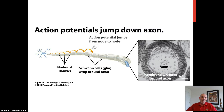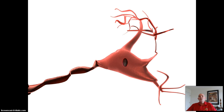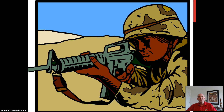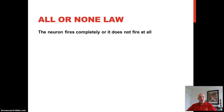This happens hundreds of times a second — the resting potential going to the action potential and back to the resting potential. A complex chemistry is involved, but that's really beyond the scope of our class. When a neuron fires along its axon, it fires or it does not fire. Think of it this way: it's a lot like pressing the trigger of a gun. You can press down harder on the trigger, but you'll not get a stronger response. This is called the all-or-none law.